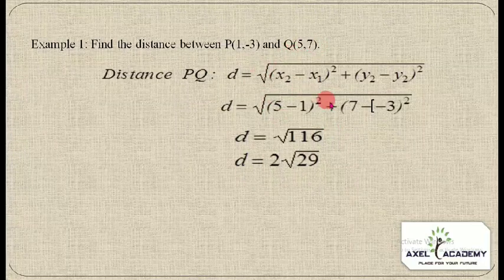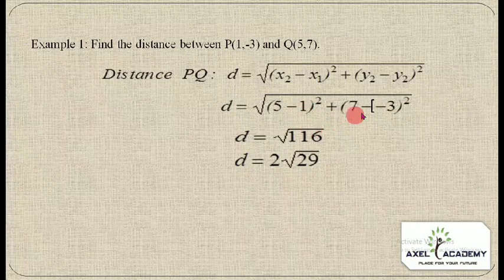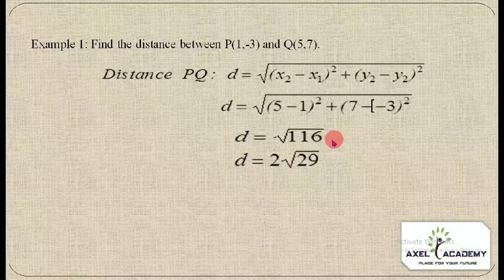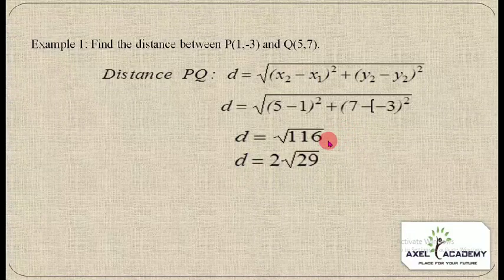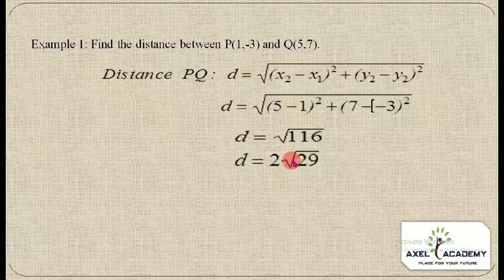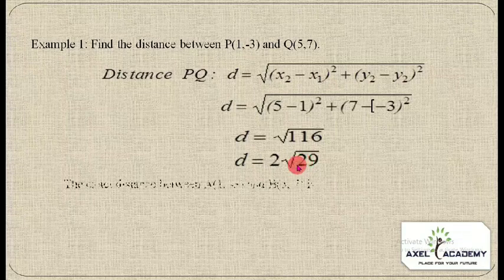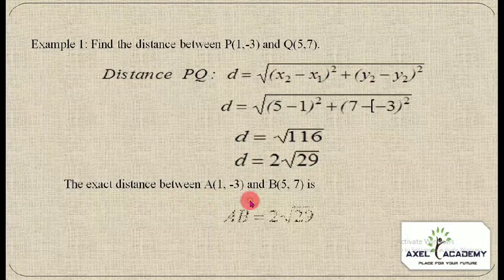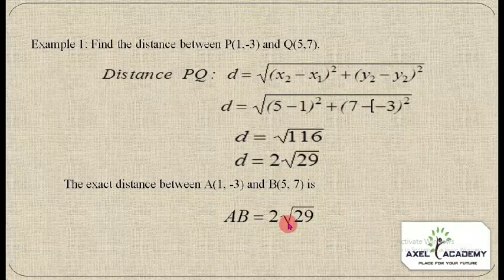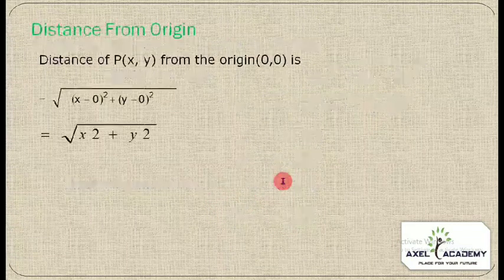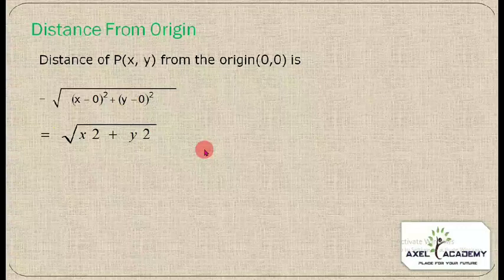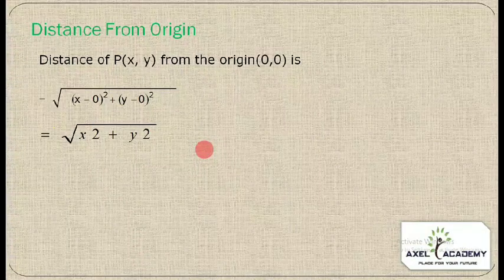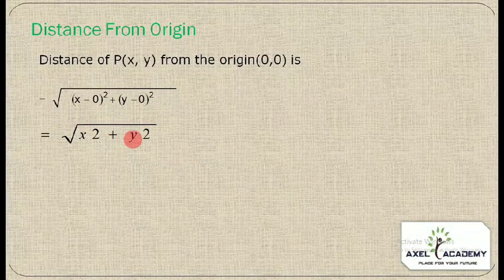PQ = √[(5 − 1)² + (7 − (−3))²] = √[4² + 10²] = √[16 + 100] = √116 = 2√29. So the distance between P and Q is 2√29.